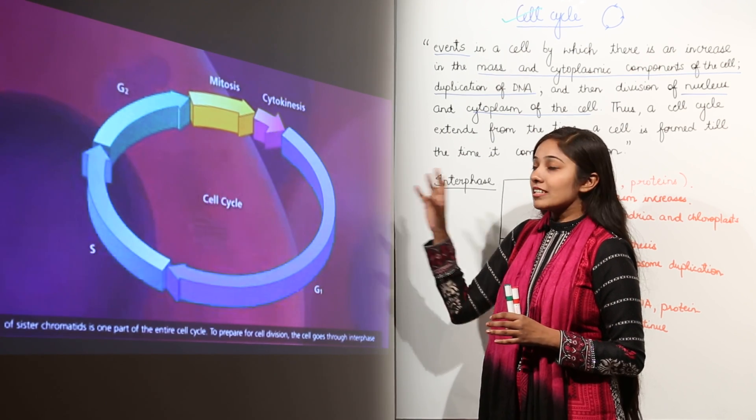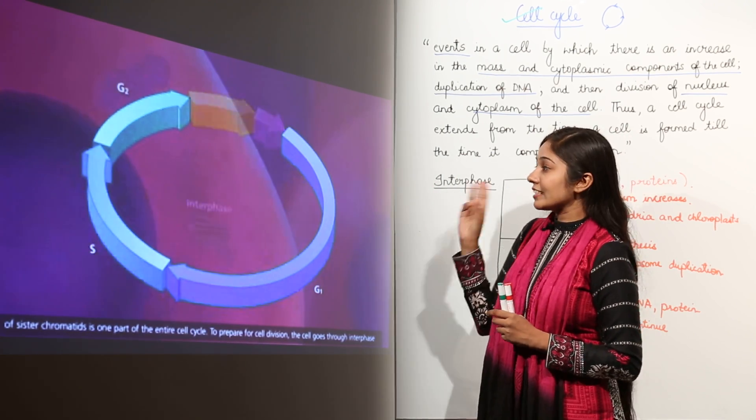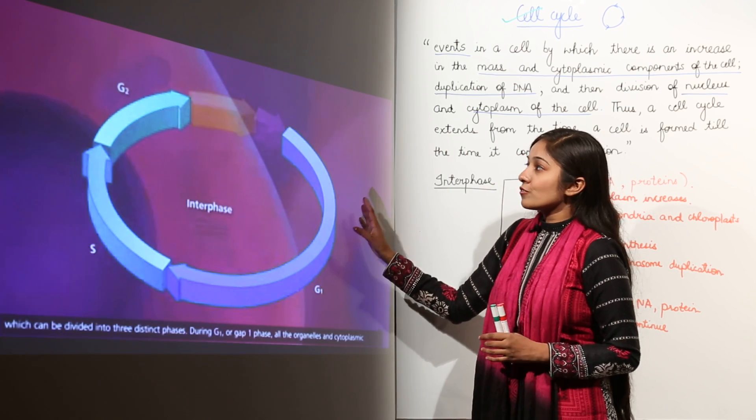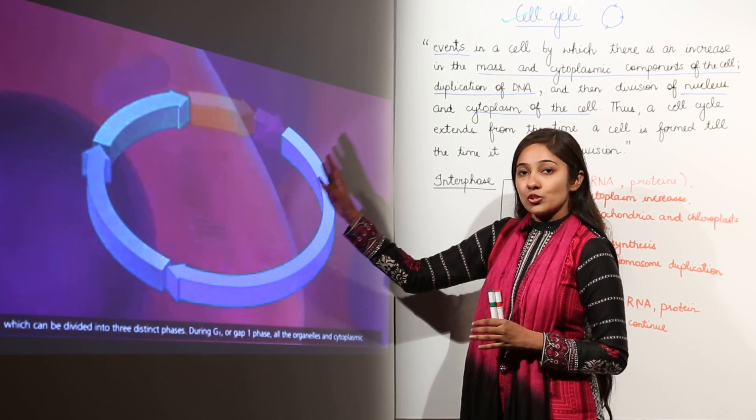This interphase of the cell cycle has further three sub phases. We have G1 phase, we have S phase, and then we have G2 phase.